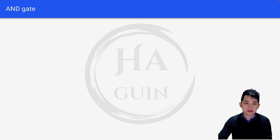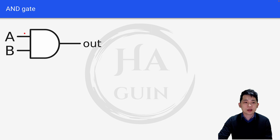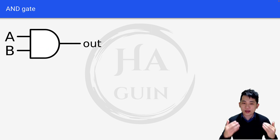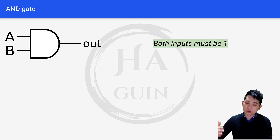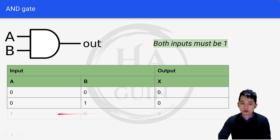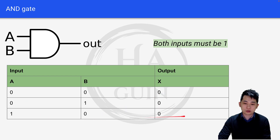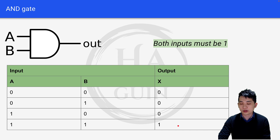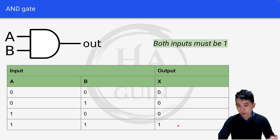For AND gate, this is the symbol representation of an AND gate, with inputs A, B, and output here. In order for the output to be 1, both A and B must be 1. So let's look at the table. 0, 0 is equal to 0. 0, 1 is equal to 0. 1, 0 is equal to 0. And 1, 1 is equal to 1. So both inputs must be 1 in order for the output X to be 1.